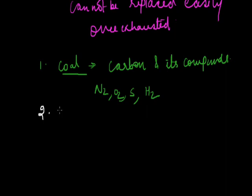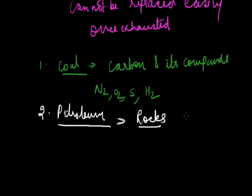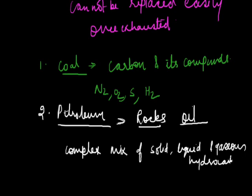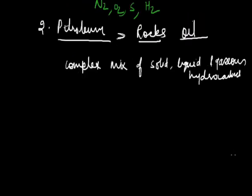The second important fossil fuel is petroleum. 'Petro' means rocks and 'oleum' means oil — the oil which is formed in the rocks is called petroleum. It is a complex mixture of solid, liquid and gaseous hydrocarbons, with small or trace amounts of carbon, hydrogen, oxygen, nitrogen and sulfur. Large reservoirs of petroleum have been preserved by nature for millions of years between porous rocks beneath the earth.